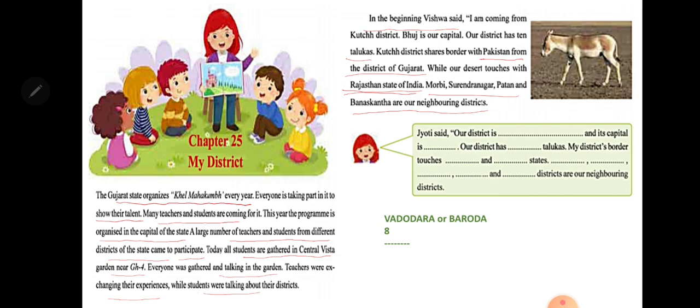Vadodara's border touches with different districts of Gujarat. Anand, Bharuch, Narmada, Chhota Udaipur, Panchmahal, and Kheda districts are our neighboring districts.